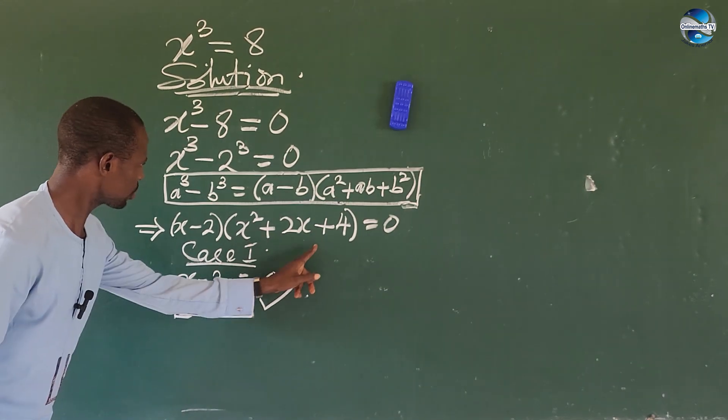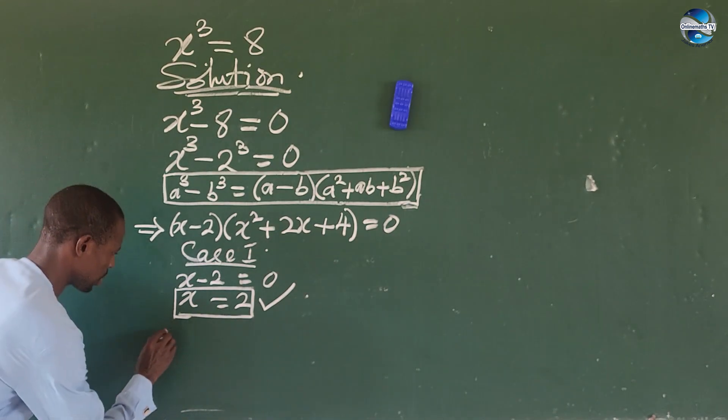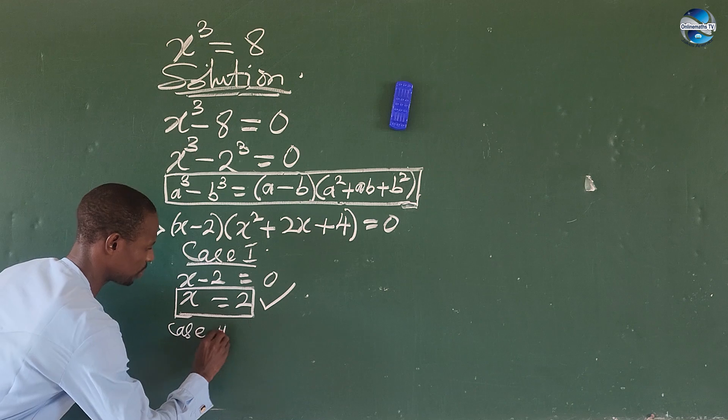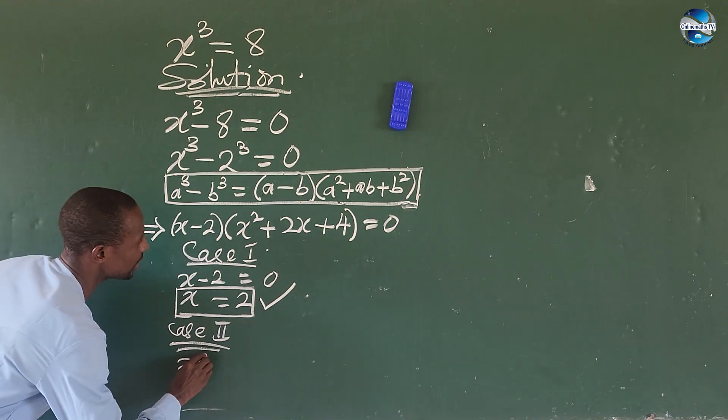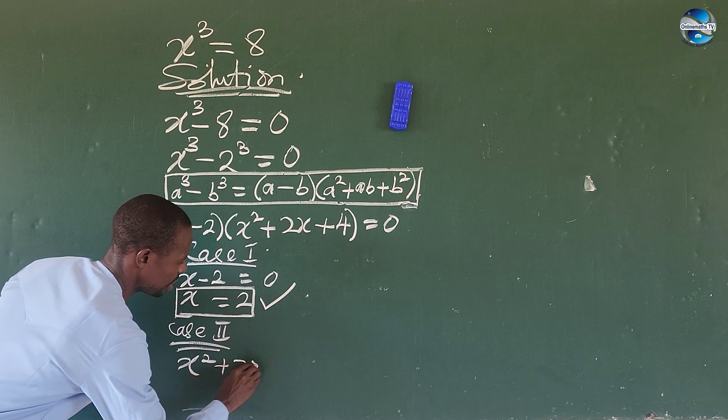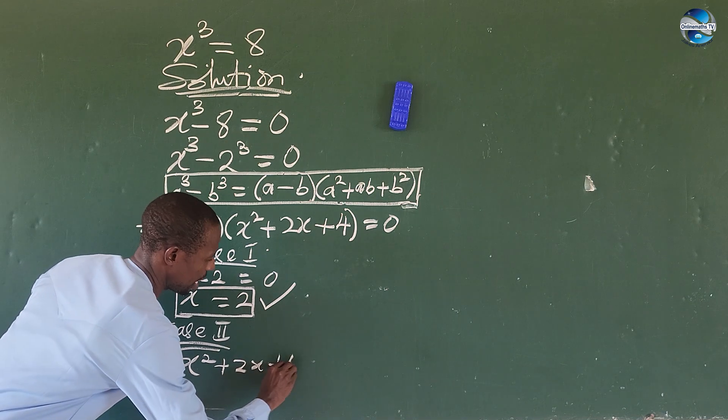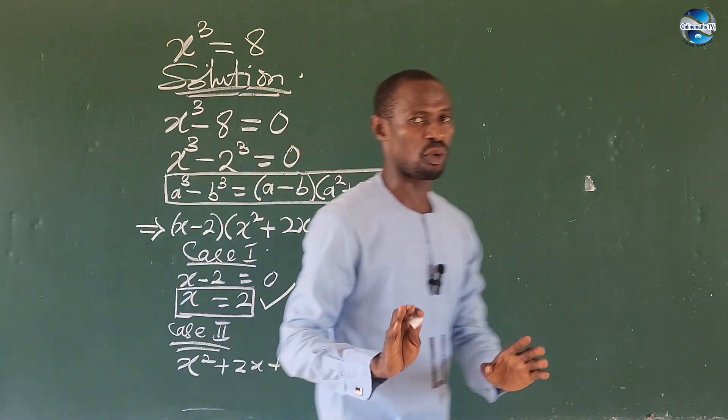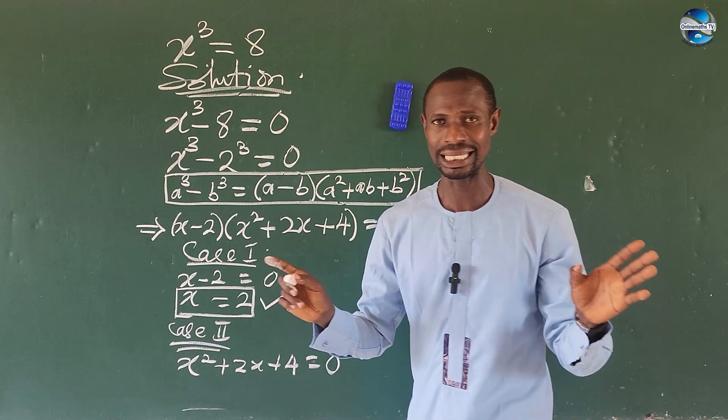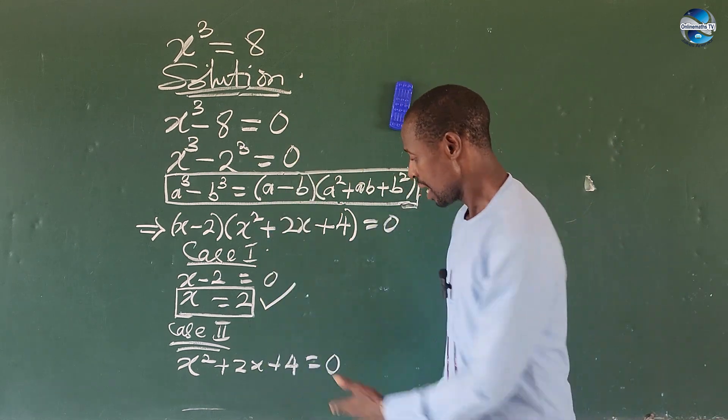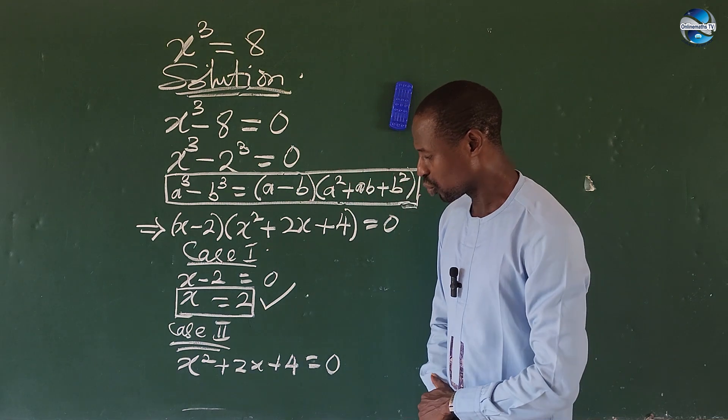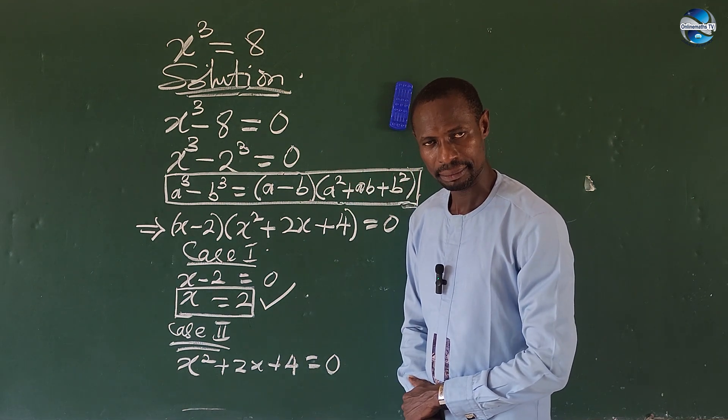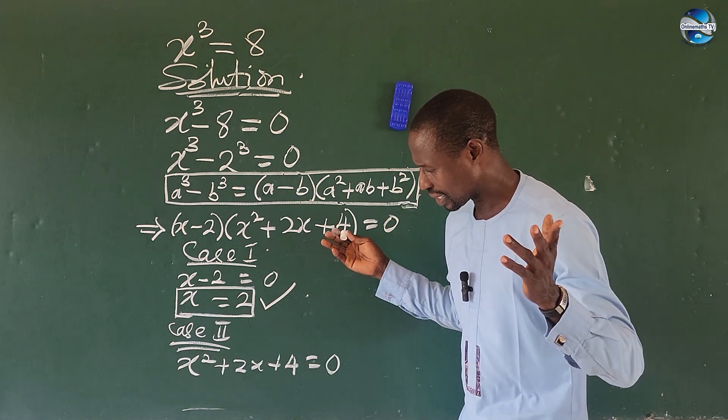Let us go for case 2. Case 2, our solution will have x² + 2x + 4 = 0. Now this is a quadratic equation. How do we solve this quadratic? If you look at this here, we are having 4 as the constant term and here we have 2 as the coefficient of x here. Can we use factorization method? No.